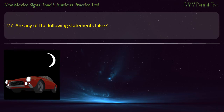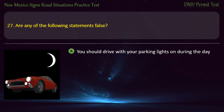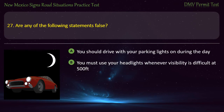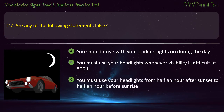Question 27. Are any of the following statements false? Options: You should drive with your parking lights on during the day; you must use your headlights whenever visibility is difficult at 500 feet; you must use your headlights from half an hour after sunset to half an hour before sunrise; or all of these statements are true. Answer: You should drive with your parking lights on during the day.